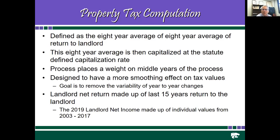The formula is designed to have a smoothing effect on tax values. There's a goal to remove the variability of year-to-year changes. It doesn't work well from a budgeting perspective to have land values going up one year and dropping the next — it certainly places stress on school boards and other local entities that rely on the property tax. Property tax theory would suggest that there is some type of smoothing process.